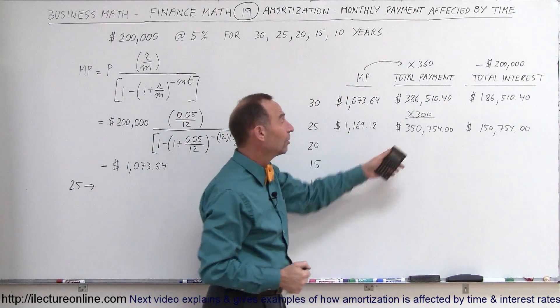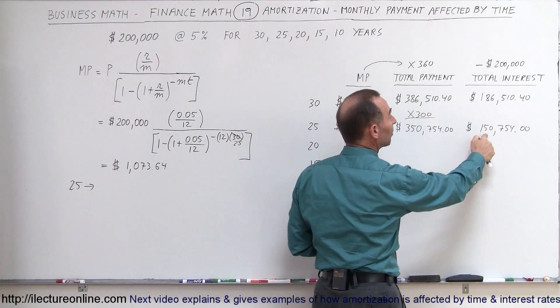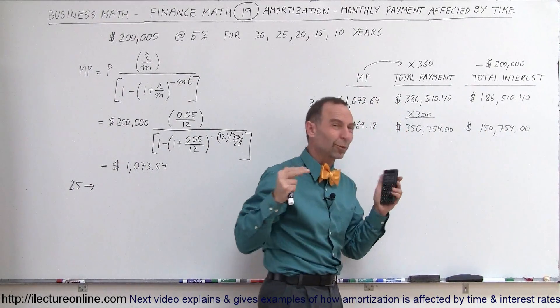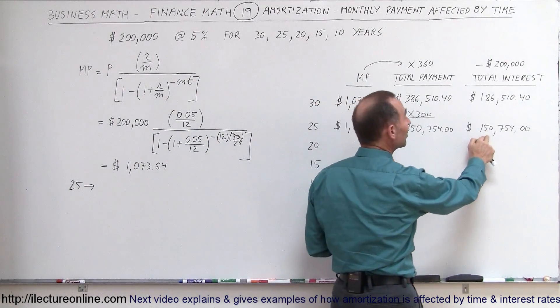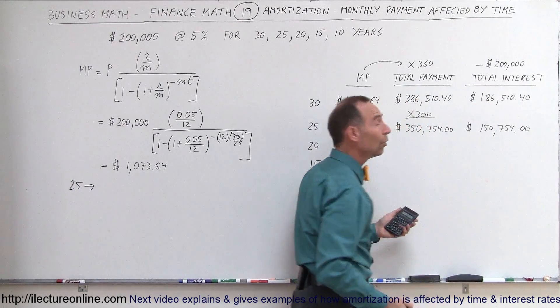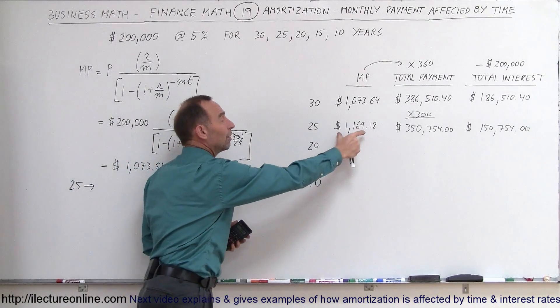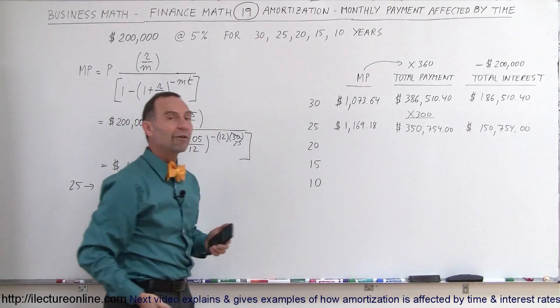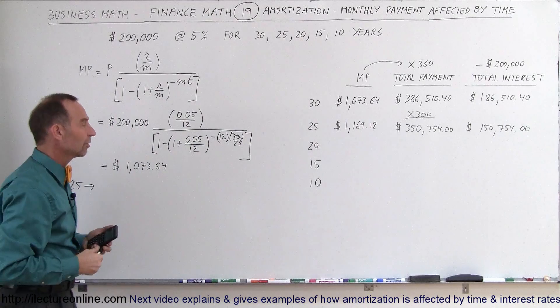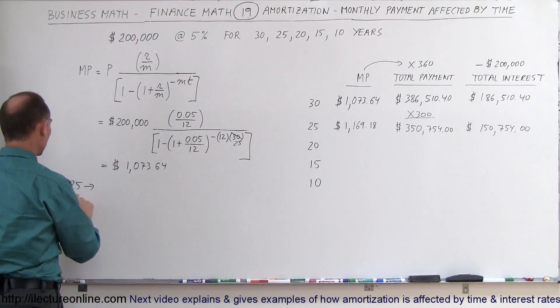Which means your interest paid to the bank will now be $150,754.00. So notice the total payments to the bank will now have decreased, and the total interest paid to the bank will now only be $150,000. Well, only, of course, still a lot of money, but $150,000 instead of $186,000. So you've saved about $36,000 in interest by paying slightly more every month and paying it off in 25 years instead of 30 years. Let's now go for the 20-year loan.